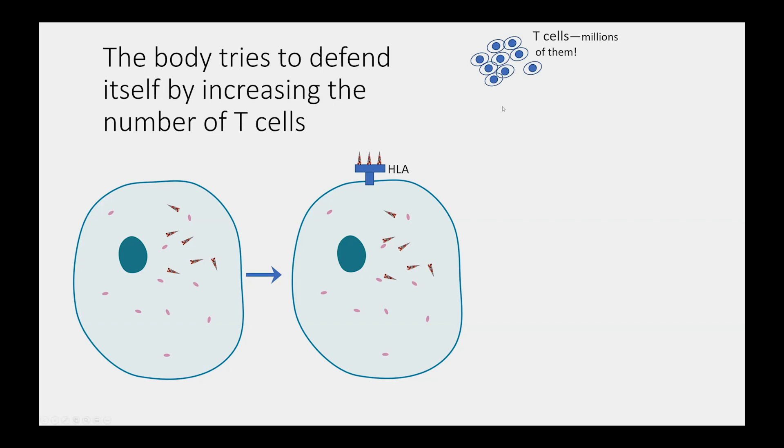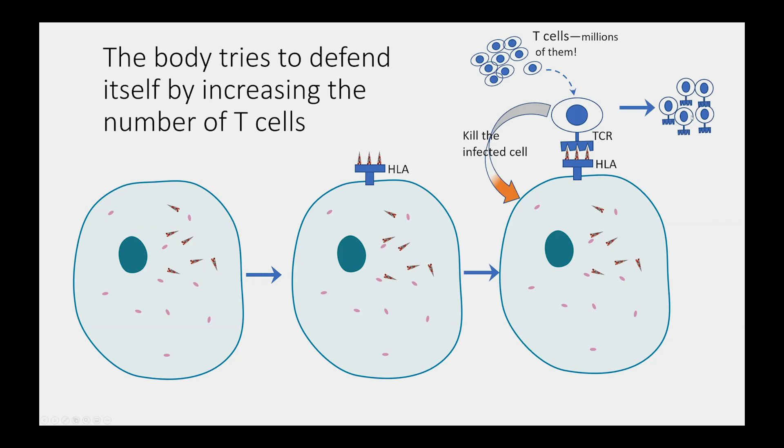In turn, our T cells, and we have millions and billions of these within our body, when they encounter a cell with an HLA molecule that it can specifically recognize. Here we have a T cell with a receptor called the TCR. This particular T cell has the specific receptor complex for this HLA with these specific SARS-CoV-2 peptides. If all that matches up, this T cell will do two things. First, it will kill the infected cell. And second, it will make many more copies of itself so that in the future, our body can defend itself against these invading pathogens.